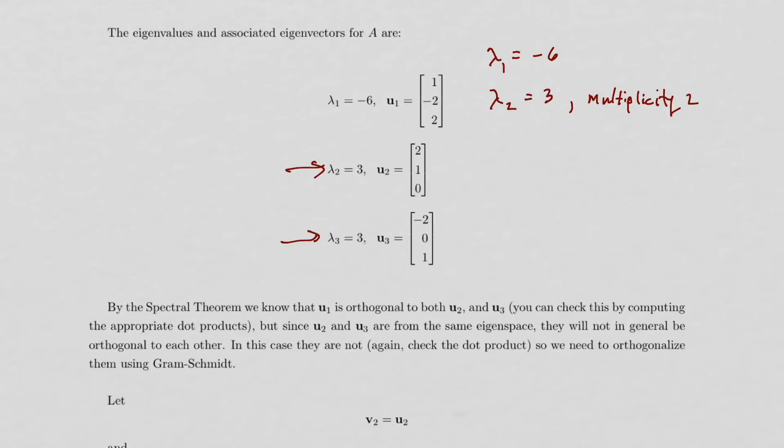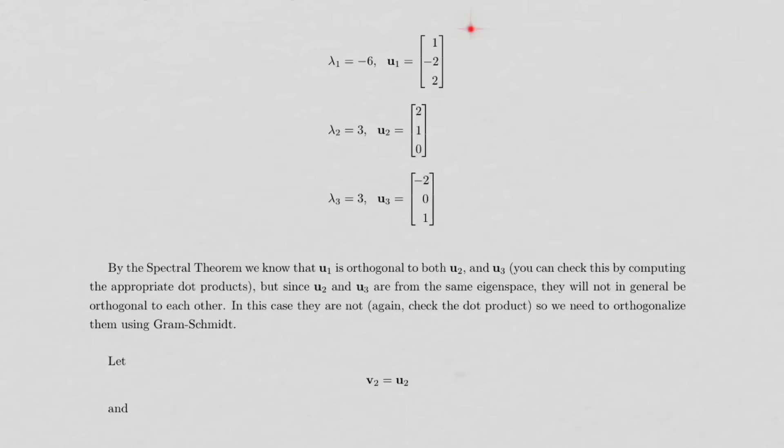And that's what the spectral theorem was talking about when it said that the multiplicity and the dimension of the eigenspace would be equal to each other. So we'll see how that works as we go on here. Okay, so we've got our set of three eigenvectors here.